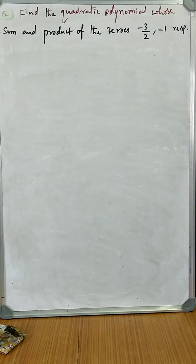Today we will discuss one more question from the polynomial which is important for one mark or two marks, depends upon their choice. The question is: find the quadratic polynomial whose sum and product of the zeros are minus three by two and minus one respectively.